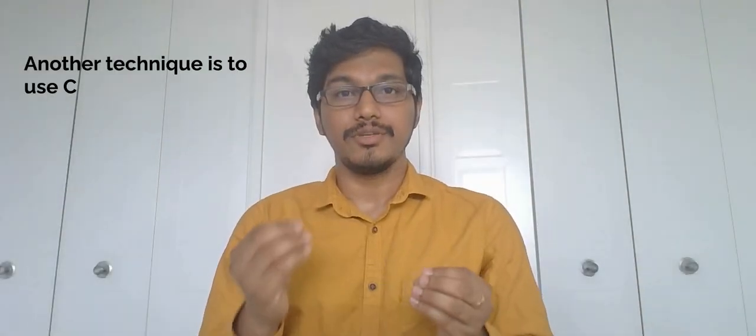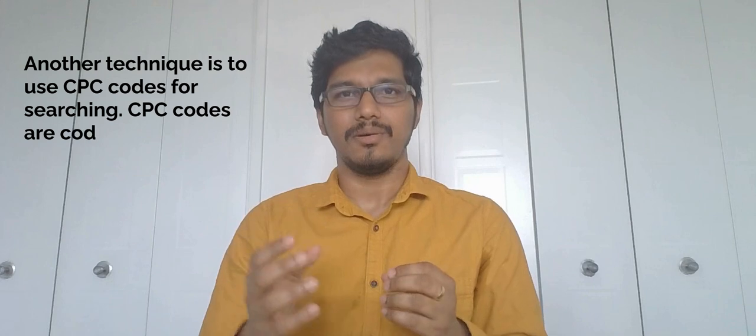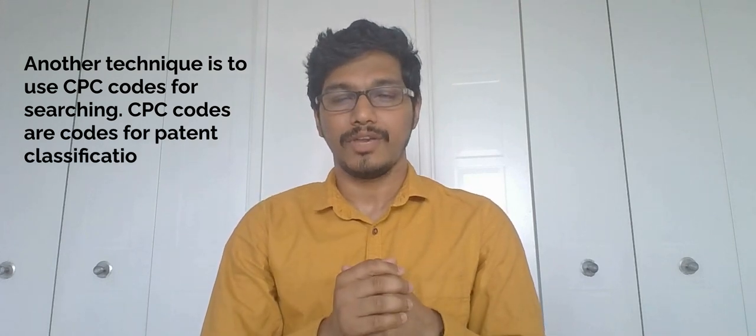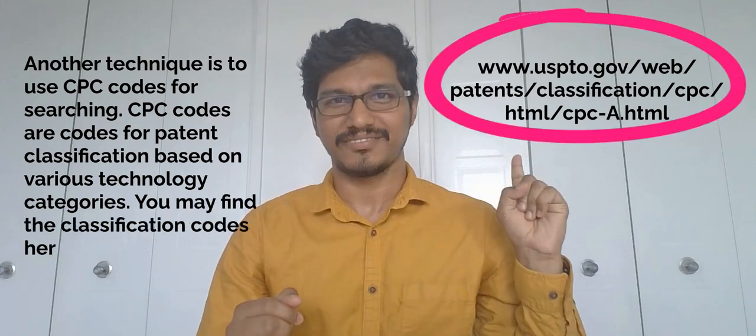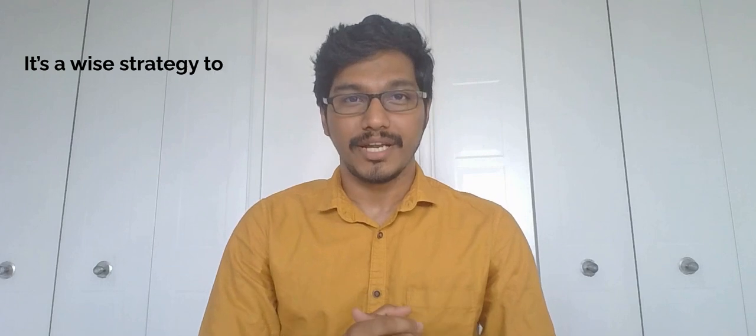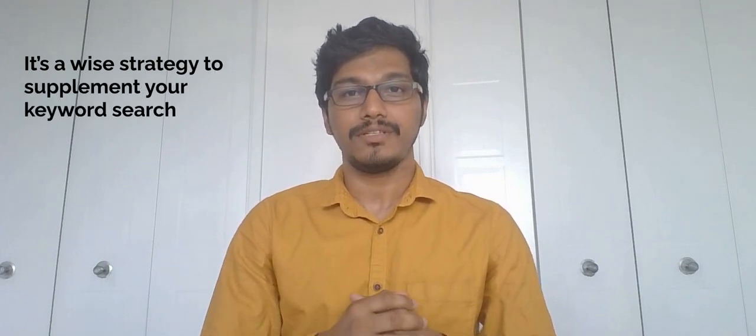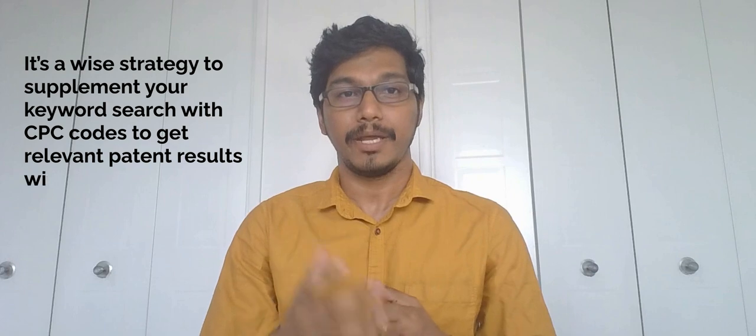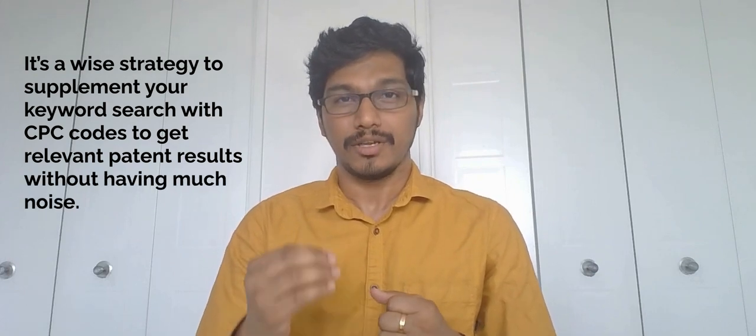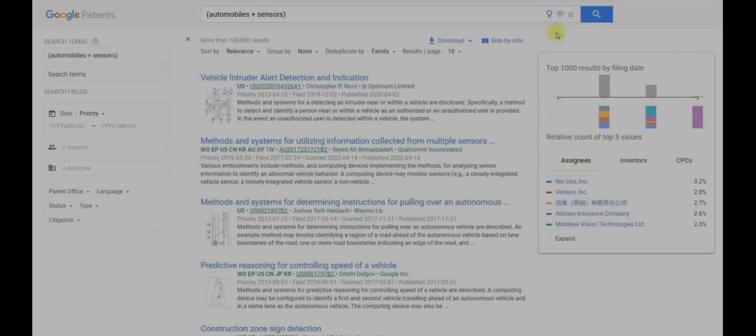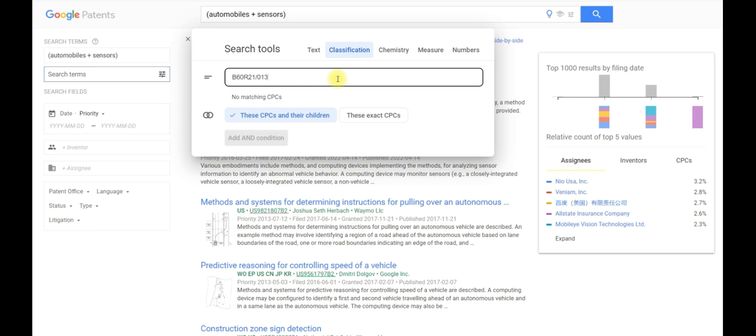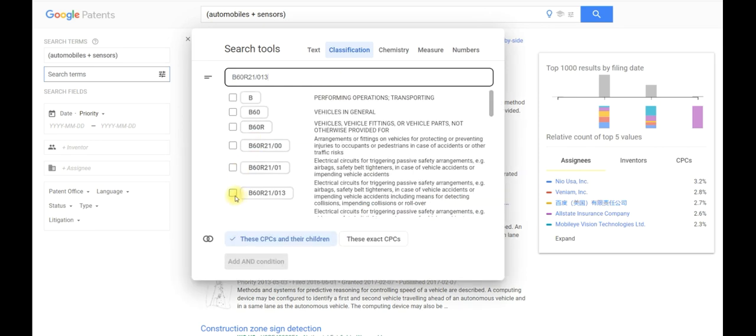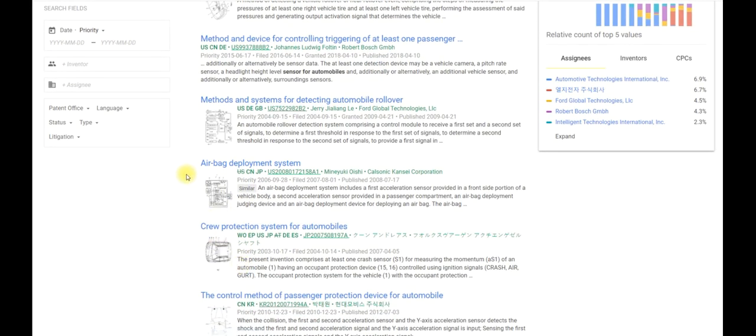Another technique is to use CPC codes for searching. CPC codes are codes for patent classification based on various technology categories. You may find the classification codes here. It is a wise strategy to supplement your keyword search with CPC codes to get relevant patent results without having much noise. As you can see, by filtering the patents based on CPC category B60R21-013, the result set now includes patents related to safety systems in automobiles.